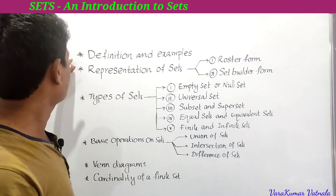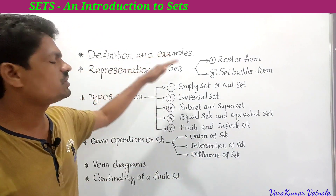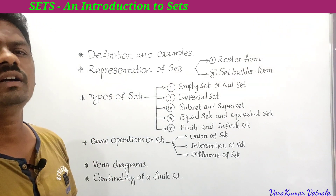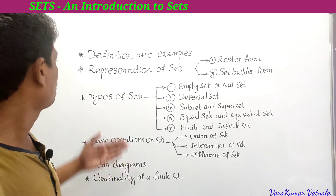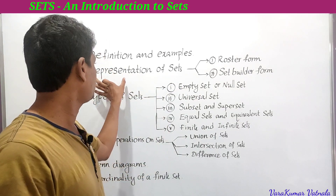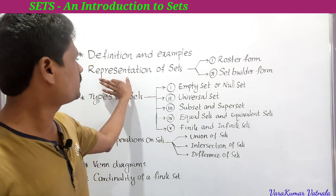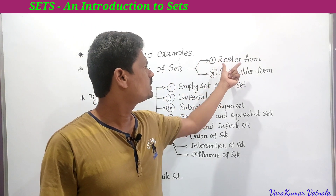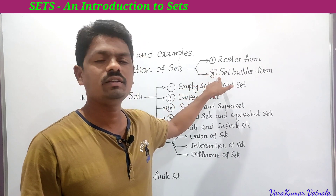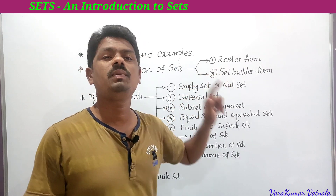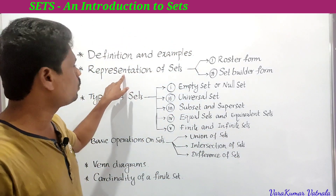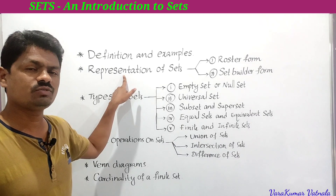The first topic is definition and examples of sets — how can we define a set and what are the examples of sets. The second topic is representation of sets, which is very very important. Sets can be represented in two forms: roster form and set builder form. From this topic we can get a four marks problem.